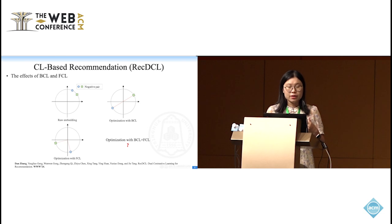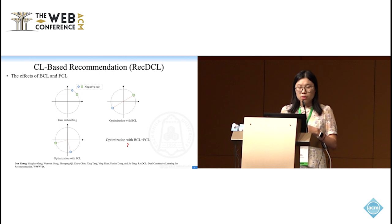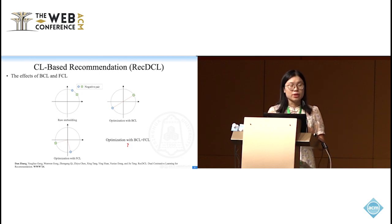We are very interested in how to research the effects of BCL and FCL. Now, if we give a negative pair for their role embedding, and then if we optimize this objective with BCL, we can see that this distribution in the representation space are very uniform. If we optimize this objective with feature-wise CL, we can see that feature-wise CL can produce some embedding distribution with orthogonal distribution. However, we have another very interesting question: if we want to combine BCL and FCL, what's the result of this representation distribution?